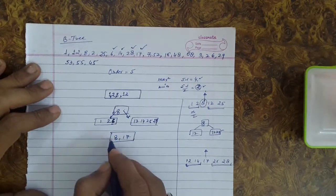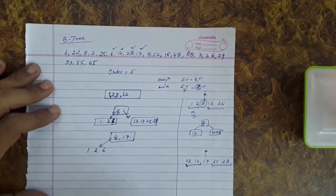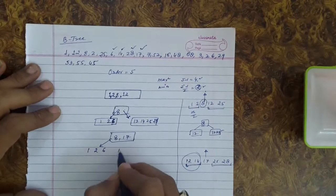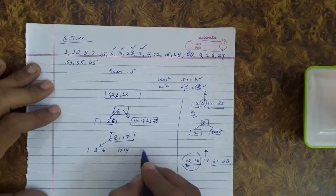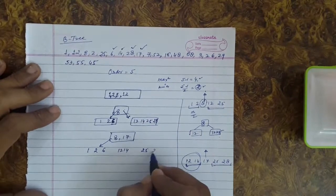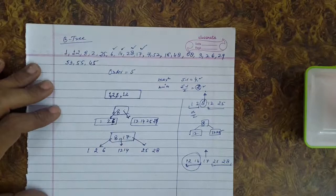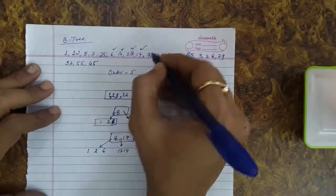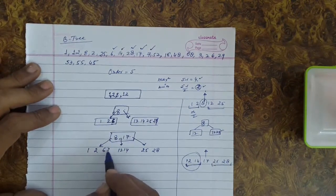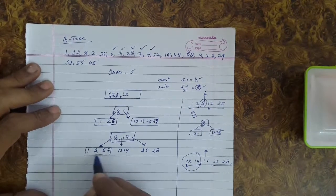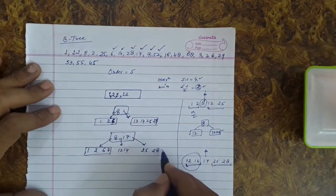We now have a node with 1, 2, and 6, a node with 12 and 14, and another with 25 and 28. Next, key 7 is inserted — since 7 is less than 8, it goes into the left node, giving 1, 2, 6, 7. Key 50 is greater than 17, so it goes into the right side.